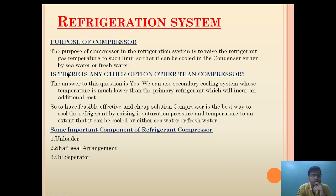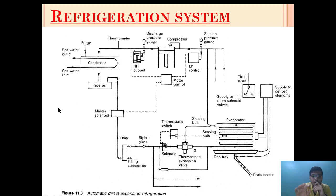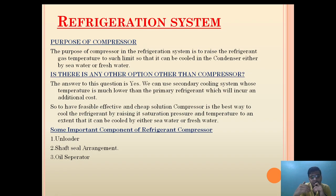The second question that comes to mind: is there any other option other than the compressor to cool the system? Yes, the answer is yes. We can use a secondary cooling system whose temperature is much lower than the primary refrigerant, but this will incur an additional cost. So to have a feasible, effective, and cheap solution, the compressor is the best way to raise the refrigerant's saturation pressure and temperature to an extent that it can be cooled by either sea water or fresh water. If we remove the compressor, we have to provide an additional refrigeration system to cool the refrigerant, which again incurs additional cost.